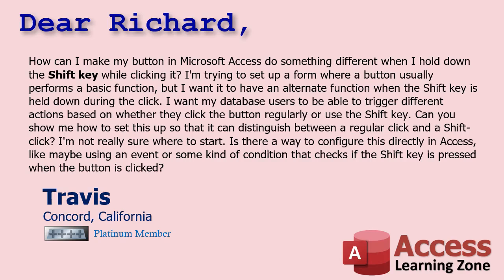Today's question comes from Travis in Concord, California, one of my Platinum members. Travis asks: how can I make my button in Microsoft Access do something different when I hold down the shift key while clicking on it? I'm trying to set up a form where a button usually performs a basic function, but I want it to have an alternate function when the shift key is held down during the click. Can you show me how to set this up so it can distinguish between a regular click and a shift click? Is there a way to configure this directly in Access, like maybe using an event or some kind of condition that checks if the shift key is pressed when the button is clicked?